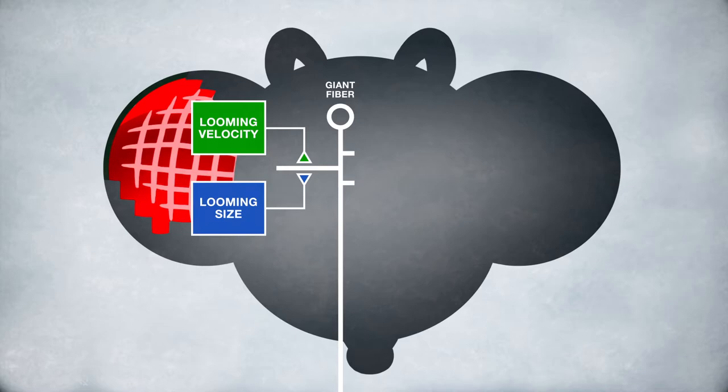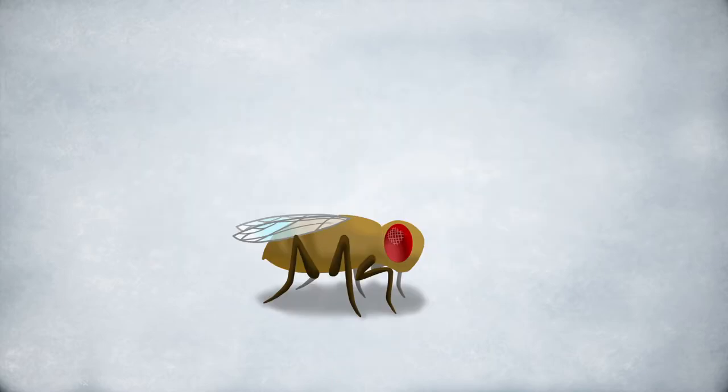Together with our previous findings, our new study suggests a model in which both angular velocity and size features are summed to determine giant fibers' spike time and bias the fly's behavior.